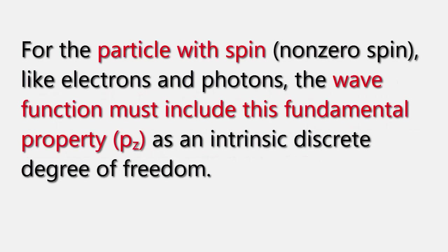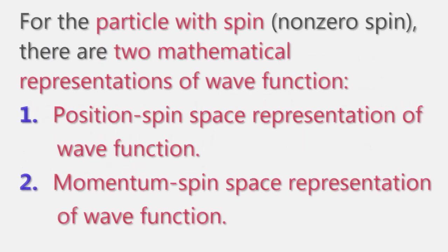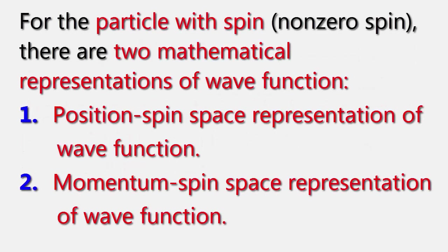For the particle with spin — non-zero spin — like electrons and photons, the wave function must include this fundamental property, spin sz, as an intrinsic discrete degree of freedom. For the particle with non-zero spin, there are two mathematical representations of the wave function: 1. Position-spin space representation of the wave function. 2. Momentum-spin space representation of the wave function.